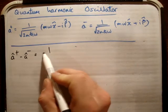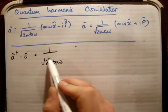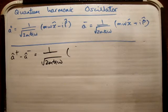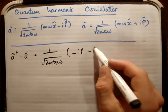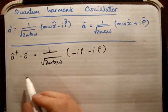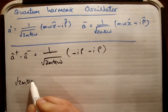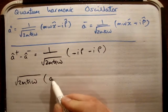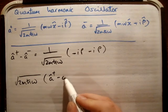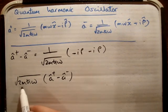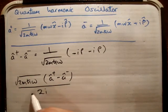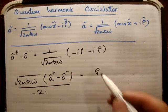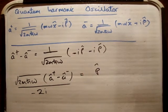So it's going to be A plus minus A minus. This time we're going to have minus iP and minus iP like that. So it's going to be square root 2MℏΩ times A plus minus A minus. We need to divide that by 2, divide it by i, and divide it by minus, and we're going to be left with P hat.